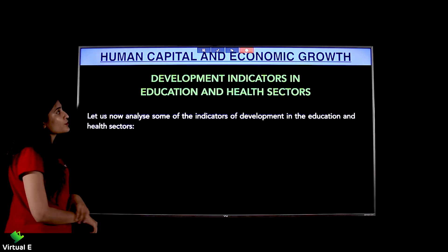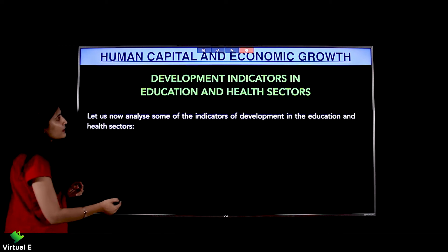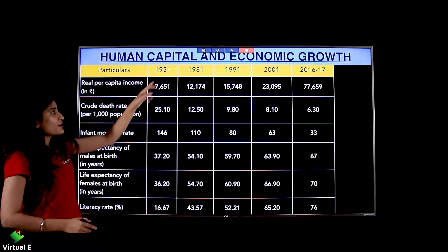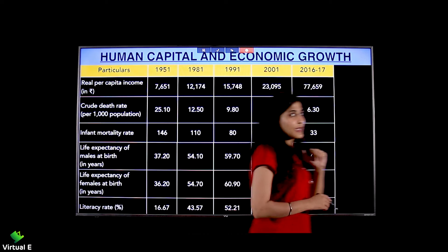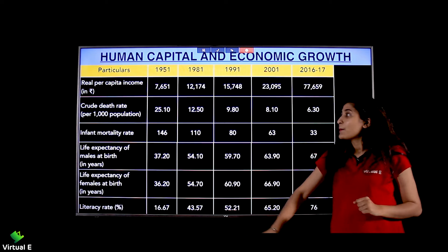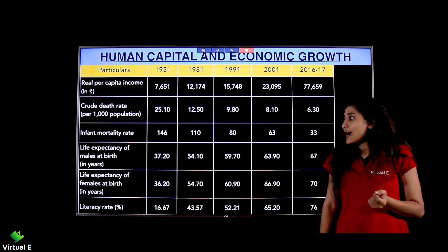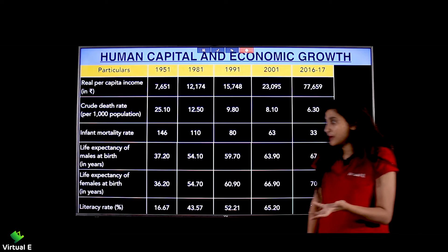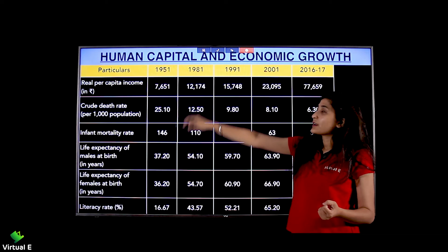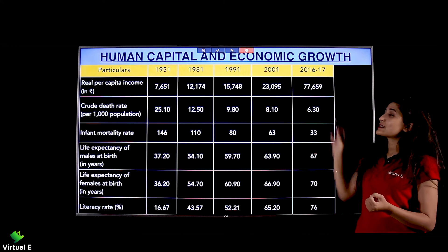Moving on to development indicators in the education and health sector. The key indicators tracked over time — from 1950-51 to 2016-17 — include real per capita income, crude death rate per thousand population, infant mortality rate, life expectancy for males and females at birth, and literacy rate.